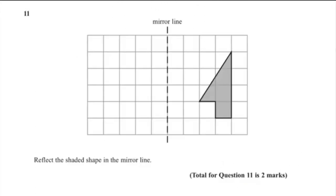Question 11: reflect the shaded shape in the mirror line. Decide how far each point is from the mirror line. For example, this point is 2 steps to the left of the mirror line, so repeat those 2 steps to the left — this point is now here.